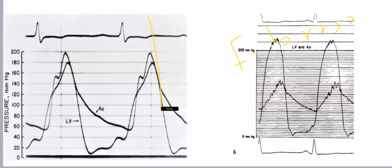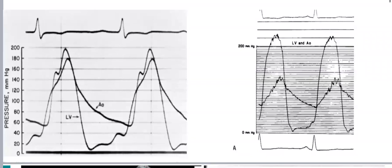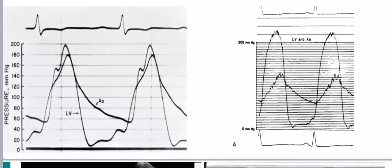What about this invasive hemodynamic tracing on the left side? The LVEDP is high, there is rapid collapse of the aortic pressure, and very wide pulse pressure — systolic around 180, diastolic around 160 or so. This is severe aortic regurgitation.